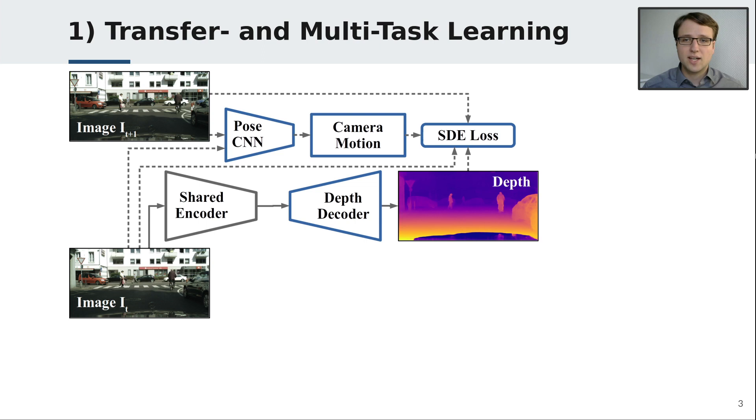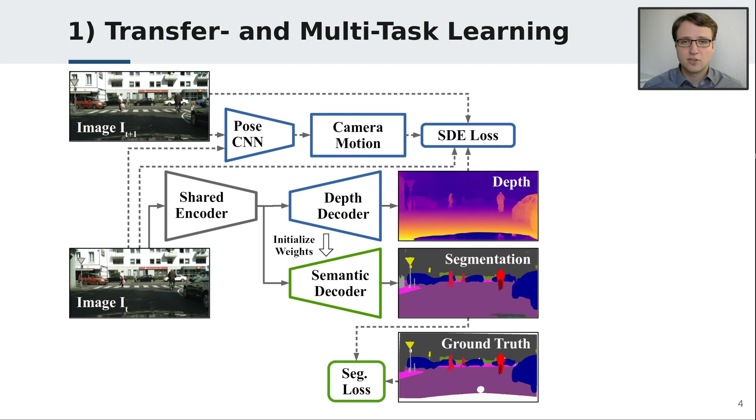First, we want to utilize the knowledge stored in intermediate features of depth estimation for semantic segmentation. For that purpose, we first train the network for self-supervised depth estimation using image pairs from a video. After that, we add a semantic segmentation branch. It is initialized with the weights from depth estimation to facilitate transfer learning. Both tasks are jointly learned with a multi-model distillation module for effective multitask learning.